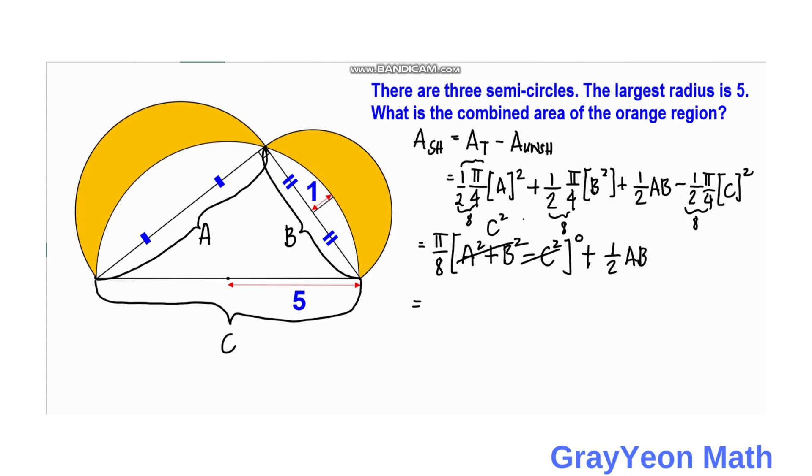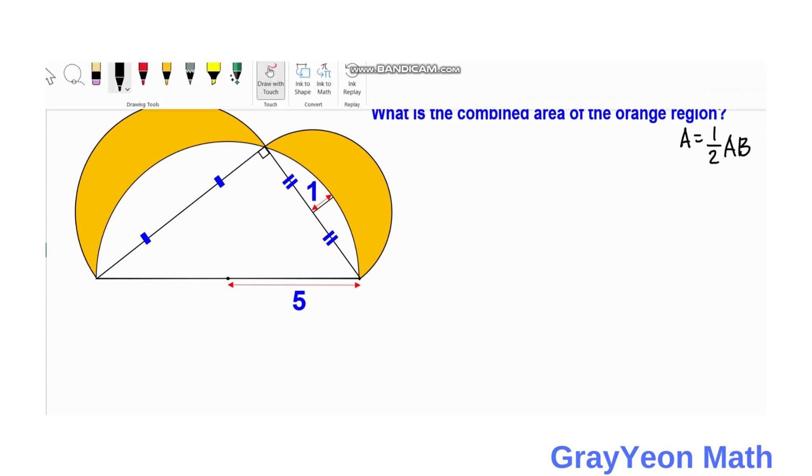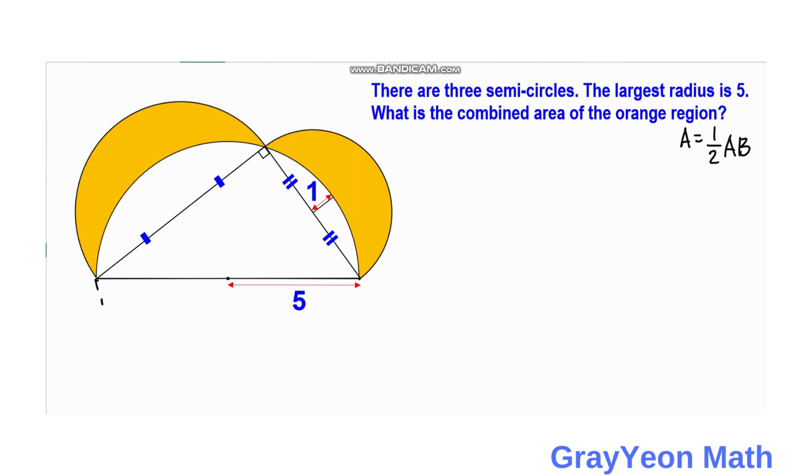So the area of the shaded region that we are looking for is equal to 1 half AB area. Okay, so next is we find the values of A and B. And for the values of A and B, we need to actually draw the semicircle to be a whole circle.